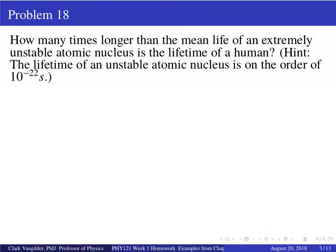That's a back-of-the-envelope calculation. As a scientist or engineer, you'll do these proof-of-concept checks — does it pass the smell test? Then get to the details later. Now here's another one with no real formula — it requires proportional reasoning. How many times longer than the mean life of an extremely unstable atomic nucleus is a human lifetime? The hint: that nucleus lives 10 to the minus 22 seconds — that's 100-billionth of 100-billionths of a second. For context, there are about 100 billion galaxies in the visible universe each with hundreds of billions of stars; that's the plus-side of 10 to the 22.